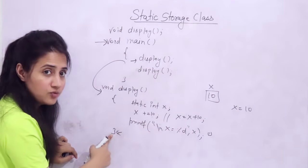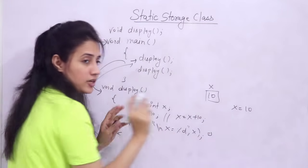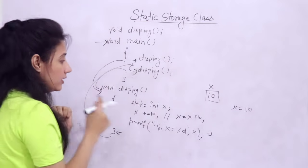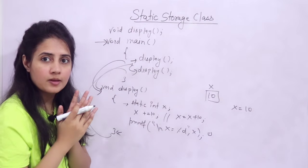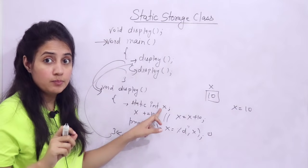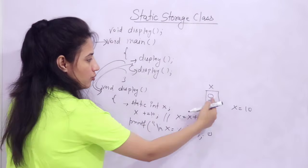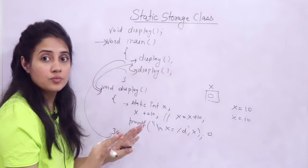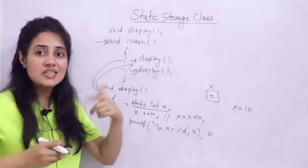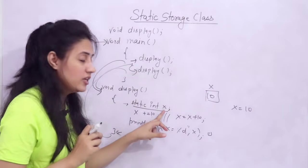Now we call display a second time — control goes back into the function. The first line again is 'static int x'. This time, x would NOT be initialized again. You might think since the line is there, x will be set to 0 again — but no. This statement will be skipped because the lifetime of x is throughout the program. x is still alive even after exiting the function the first time. It retains its previous value of 10.